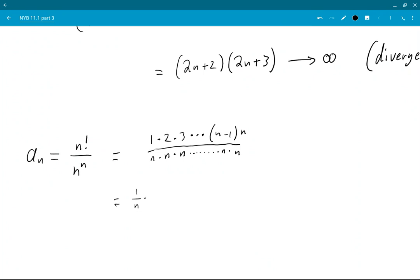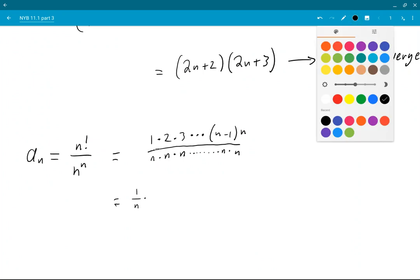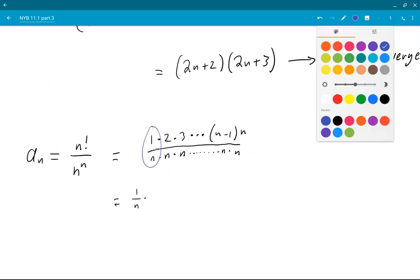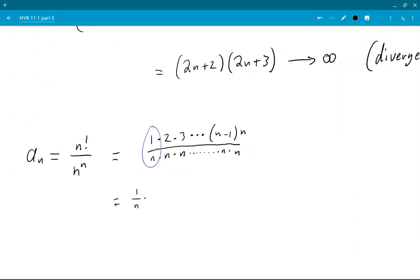So I'm just going to separate the 1 over n in front there, and then look at the rest of it and say, what is going on?